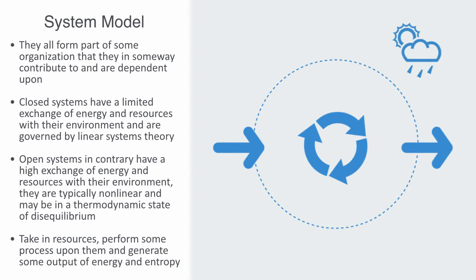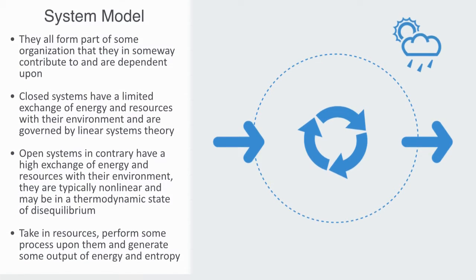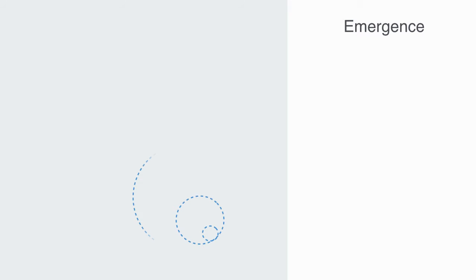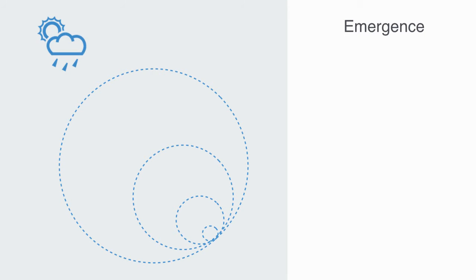Biological creatures have to import energy, process it and export entropy. Systems have a hierarchical multi-level structure with smaller elements nested within subsystems that are, in turn, nested within larger systems and so on, until we get all the way up to the level of the whole environment.